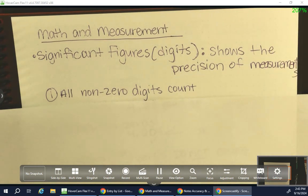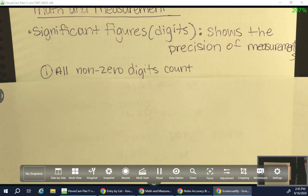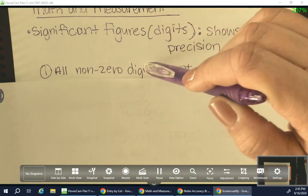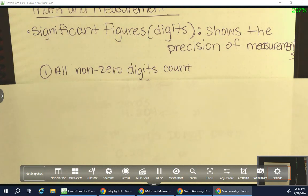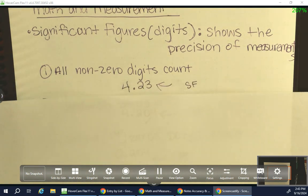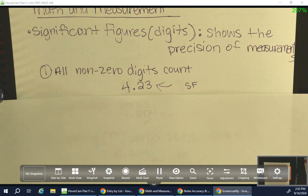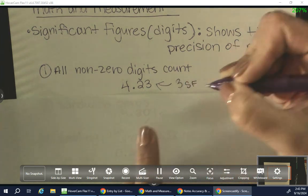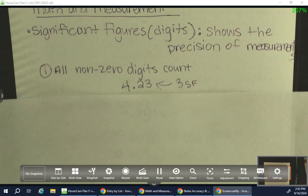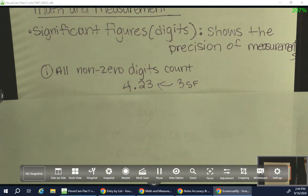So the first one, the first rule to decide whether something is a significant figure or not is all non-zero digits count. As in, if it's a non-zero digit, a non-zero value, that is a significant figure. So for example, if I have 4.23, how many significant figures are on that? Should be three. So this has three significant figures. 4.23 has three significant figures.